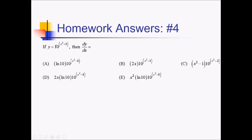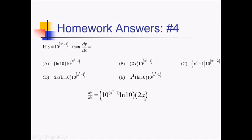On this problem, I need the derivative of 10 to the x squared minus 1. I'm going to need a chain rule on this, and since this is a non-e base, I'll use the b to the x times ln of b formula. Starting with the derivative of the outer function — 10 to the something — that's 10 to the something times ln of 10. Then I multiply by the derivative of the inner function x squared minus 1, which is just 2x. Putting 2x and ln of 10 out in front matches answer choice D.